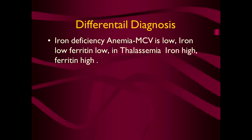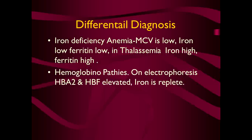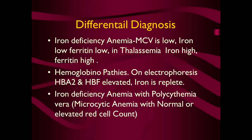For differential diagnosis, most commonly consider iron deficiency anemia in which MCV is low, iron is low, and ferritin is low. In thalassemia, iron is high and ferritin is high. All other hemoglobinopathies should also be considered, including hemoglobin E and hemoglobin constant spring. Additionally, iron deficiency anemia with polycythemia vera presents with microcytic anemia with normal or elevated red cell count, and anemia of chronic disease and macrocytic anemia also fall into the differential diagnosis.